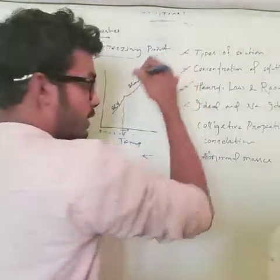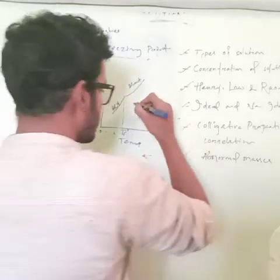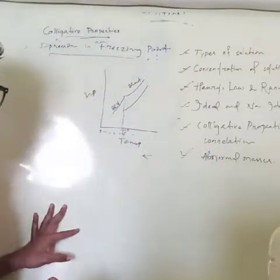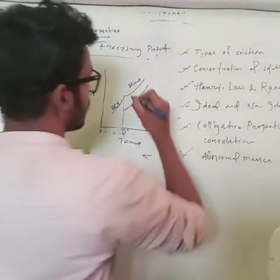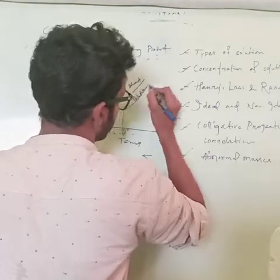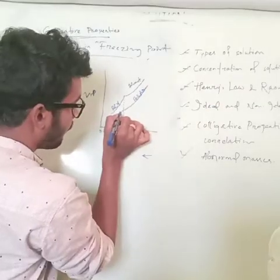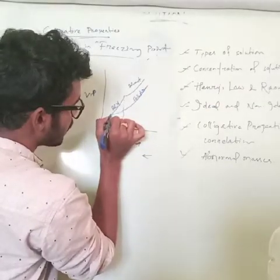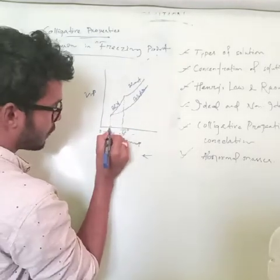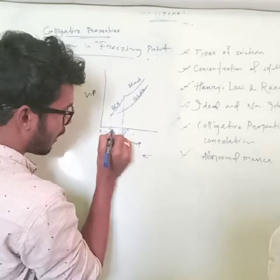Now we add some non-volatile solute. The vapor pressure curve of the solution will be lower. But it will freeze at a different, lower point. Let's call this TF. So ΔTf equals TF⁰ minus TF — it is the difference between these two temperatures.